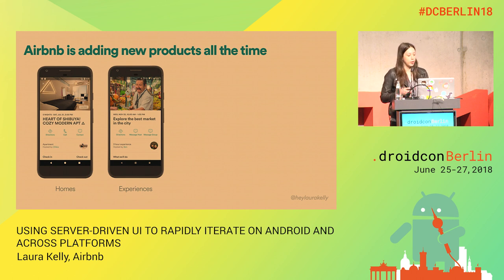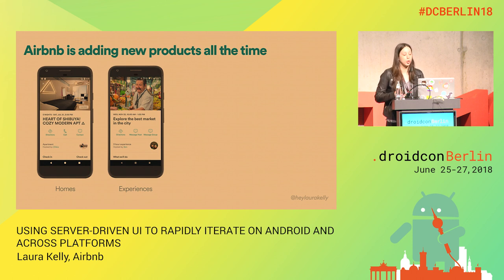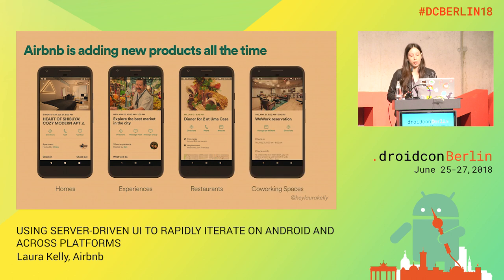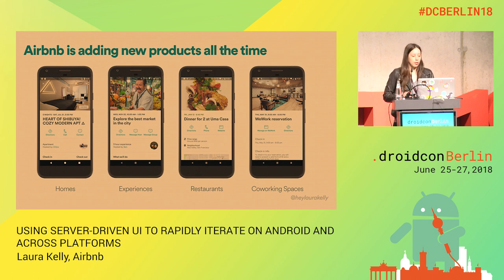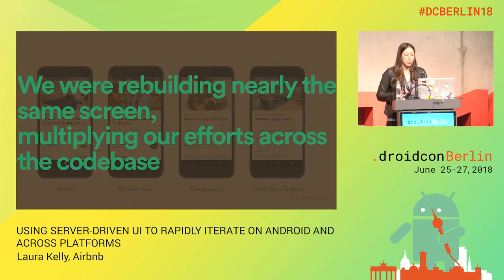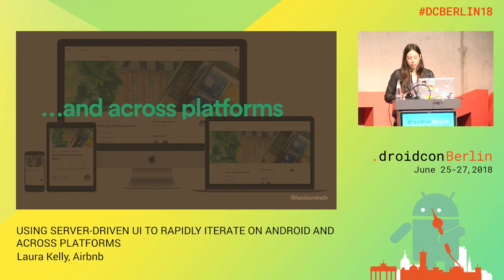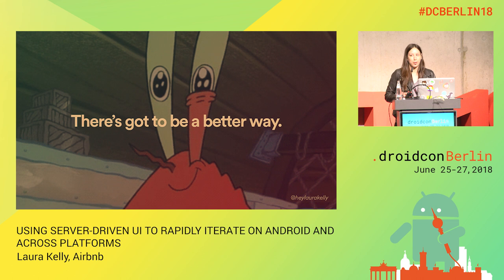When we started doing Experiences, we started thinking about Airbnb as a platform for your end-to-end trip. We've been launching more and more products — now you can book a restaurant reservation on Airbnb, and you can also book a co-working space. As we launched these different products, we would build out a new screen for each of these reservations. They all look kind of similar, but there are a few things here and there that change. We thought we were rebuilding the same screen over and over again, multiplying our efforts across the code base. And because Airbnb is a mobile-forward company launching on all platforms — web, iOS, and Android — we were also duplicating our efforts across platforms.